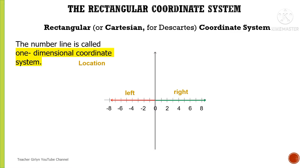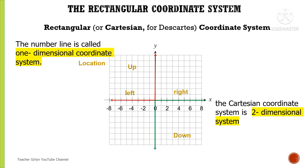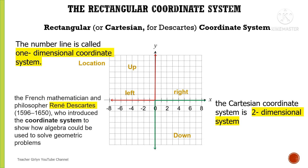In a number line, we can only move left or right. Now, in a Cartesian Coordinate System, we have two sets of number lines perpendicular to each other, and we can now move up or down as well. Therefore, the Cartesian Coordinate System is a two-dimensional system because it has two coordinates. Just a quick history: the French mathematician and philosopher René Descartes (1596–1650) introduced the Coordinate System to show how algebra could be used to solve geometric problems.